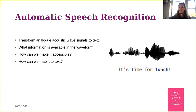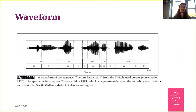Automatic speech recognition is essentially transforming an analog acoustic wave of signals into text. Here we have the sound wave for somebody saying 'it's time for lunch' and what we want to do is get in the sound wave and get out the string. If we align a sentence with the sound wave, we can already see that there are some things we can directly extract and locate to the string.